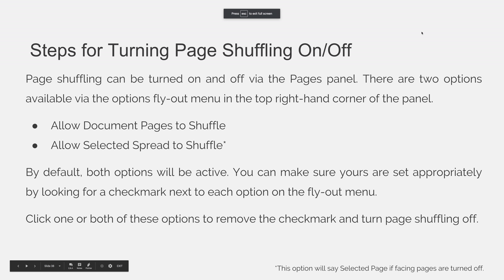Page shuffling can be turned on and off via the Pages panel. There are two options available via the Options flyout menu in the top right hand corner of the Pages panel. The first is Allow Document Pages to Shuffle. The second is Allow Selected Spread to Shuffle. By default, both options will be active. You can make sure yours are set appropriately by looking for a checkmark next to each option on the flyout menu.